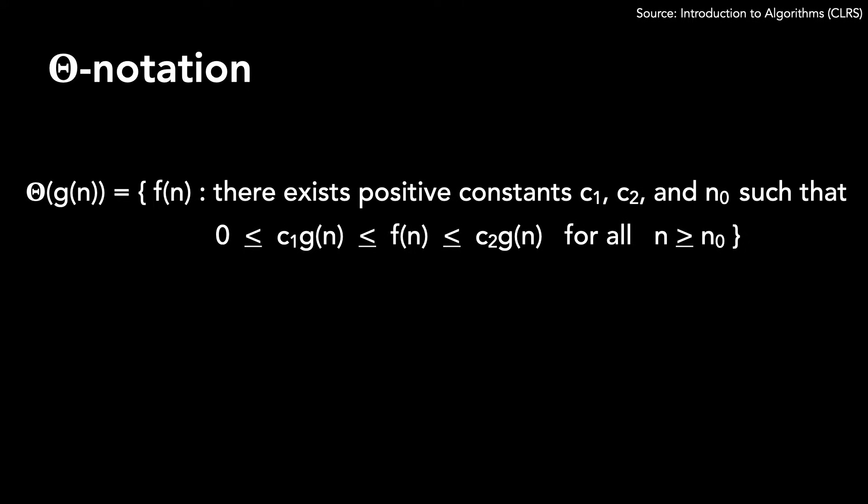We say that Θ(g(n)) means there is f(n) such that there exist positive constants c1, c2, and n0, where 0 ≤ c1·g(n) ≤ f(n) ≤ c2·g(n) for all n ≥ n0.